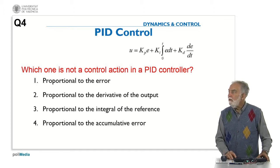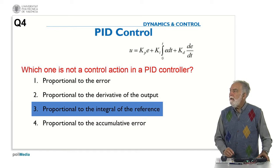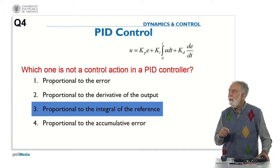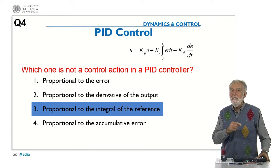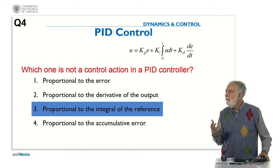The one which is not correct is the third one, because the control action is not proportional to the integral of the reference. If the reference is constant, this integral will be growing continuously, and the control action will grow continuously. So this is not correct.